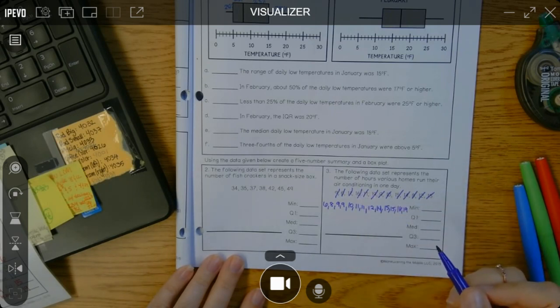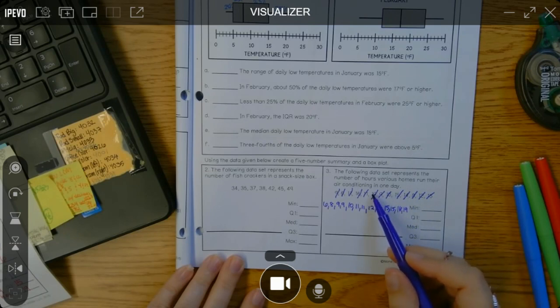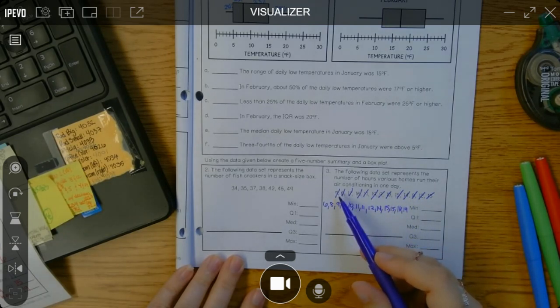And before I start doing anything, I always double check. There's one, two, three, four, five, six, seven, eight, nine, 10, 11, 12, 13 numbers in the data set.